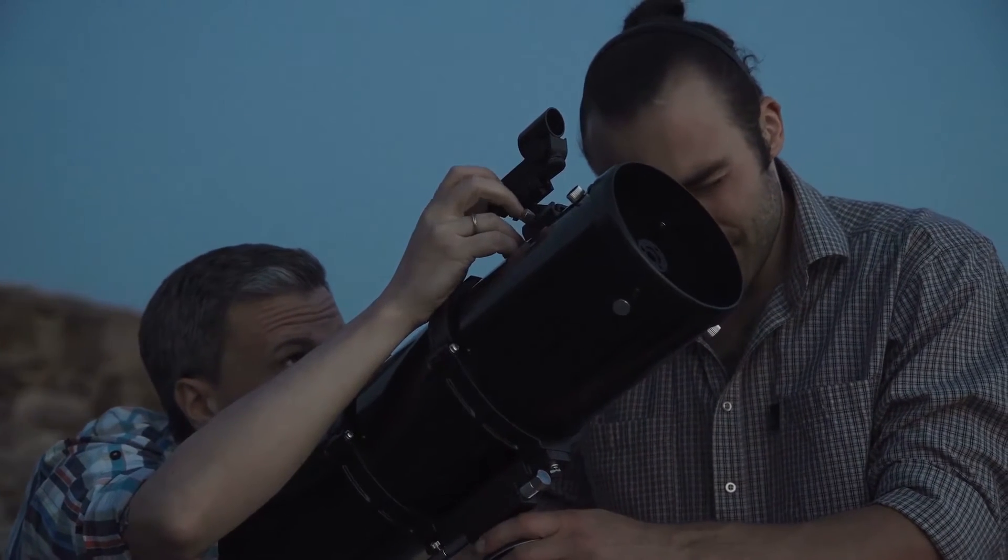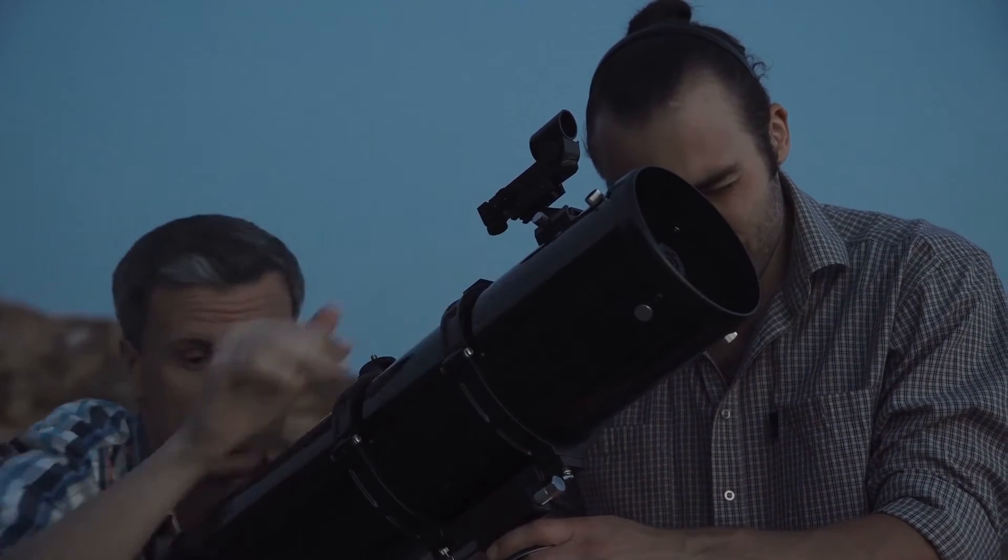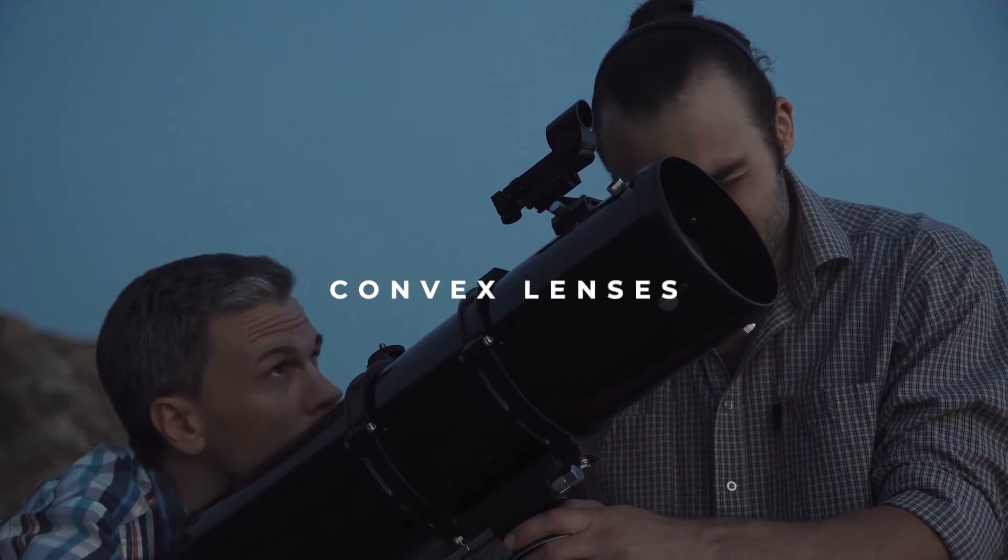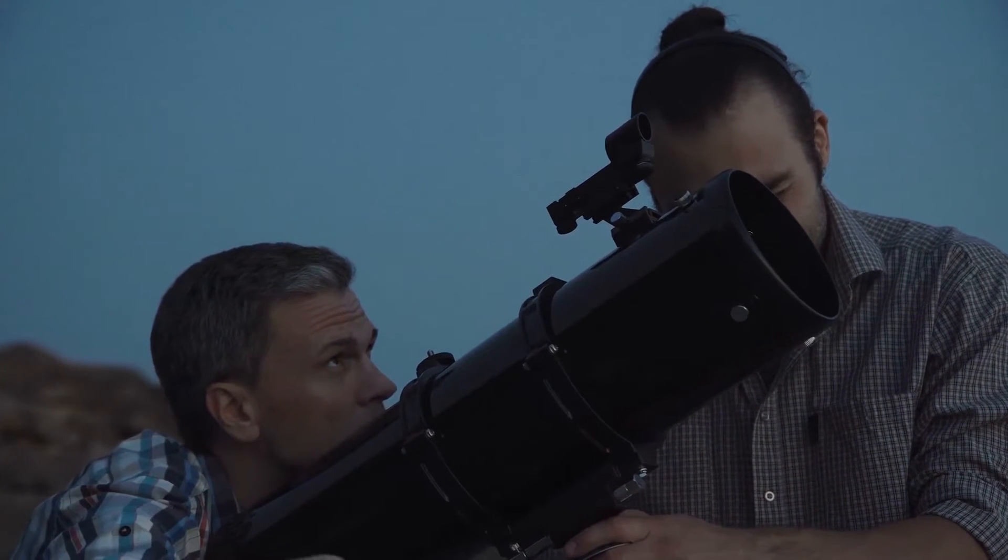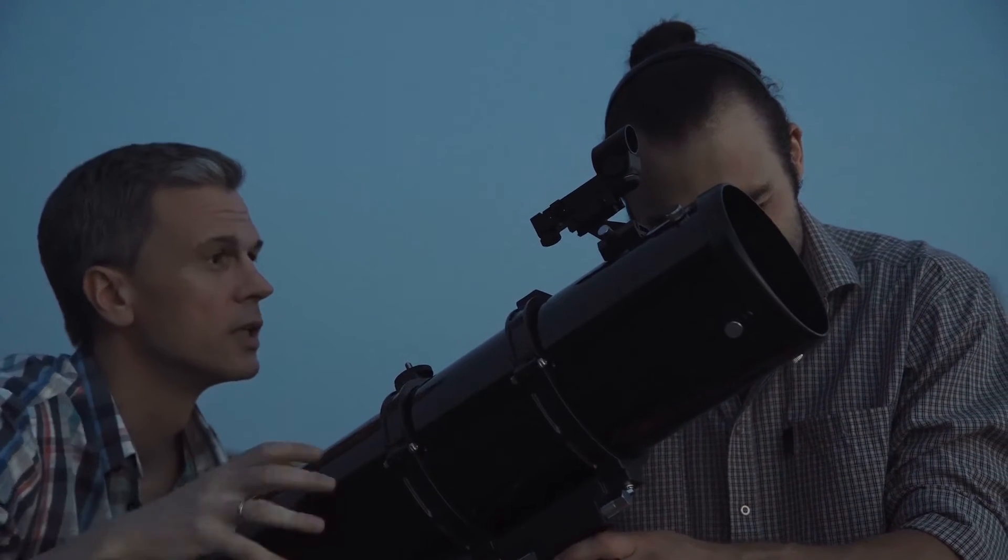Most modern telescopes use lenses, specifically a combination of convex lenses that work together to gather more light and bend it in a manner that magnifies the image.